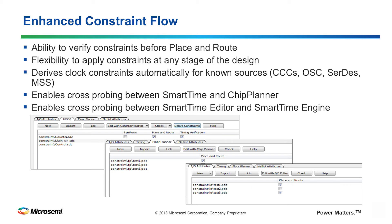We support cross-probing between tools. SmartTime is our static timing analysis tool used to verify timing after layout, and you can cross-probe it with our floorplanner tool called ChipPlanner — useful when you're not meeting timing, as you can see exactly where cells are placed on the die. We also have cross-probing between SmartTime and the SmartTime editor, allowing you to add exceptions like false paths or multi-cycle paths and regenerate timing without rerunning layout.